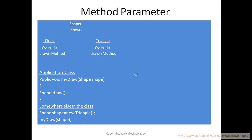However, we are not achieving good polymorphism — we are still hard-coding it. This is not the perfect way. We can improve by rewriting the Application class. We can define a public void method called myDraw that catches the reference of the Shape object. But again, somewhere else in the class we still have to define Shape shape = new Triangle() and call myDraw, so we are still explicitly defining what shape it is going to draw.